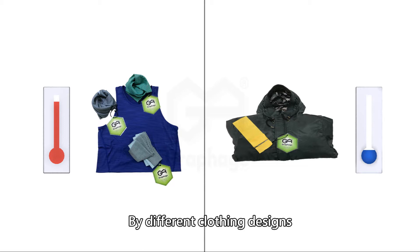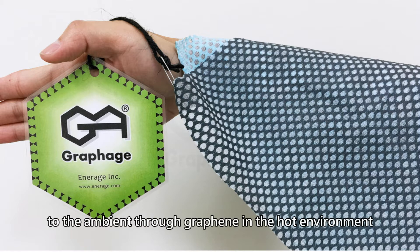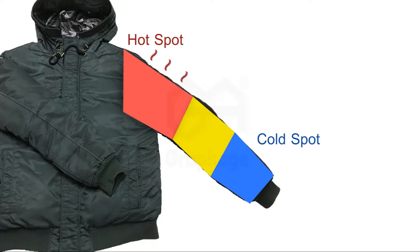By different clothing designs, graphene clothing makes people feel cool or warm. The body heat can be quickly expelled out to the ambient through graphene in the hot environment when graphene is partially applied in textile by printing or laminating.